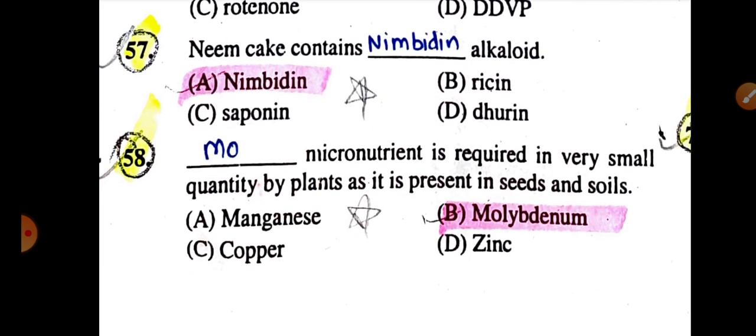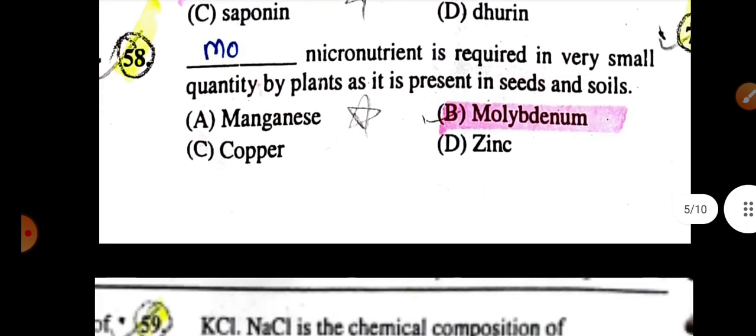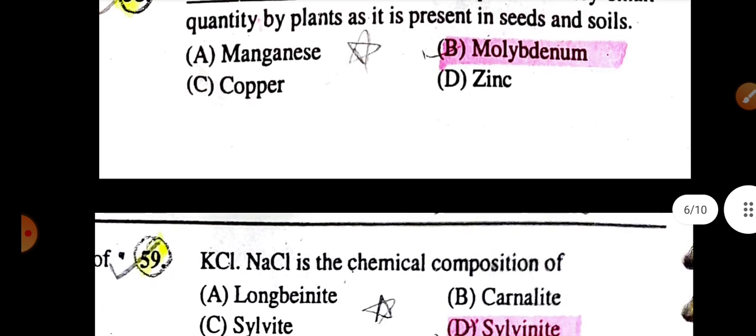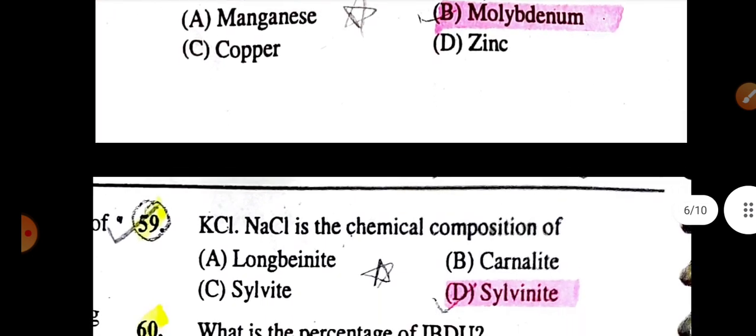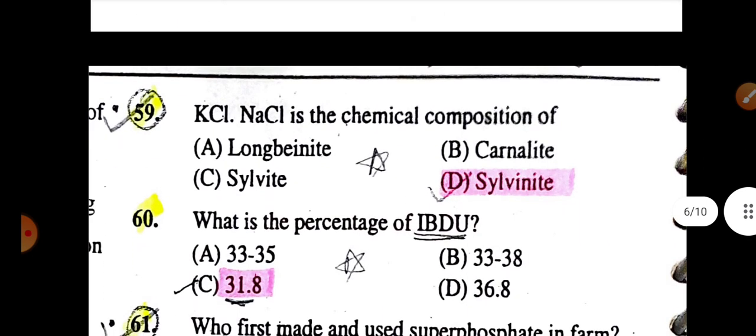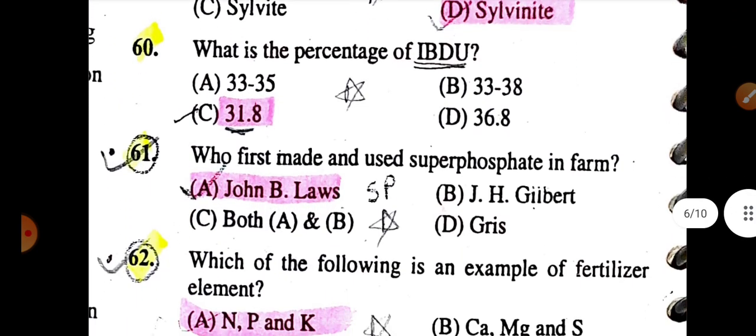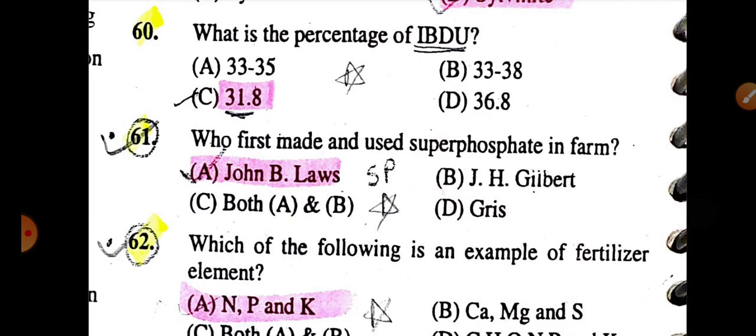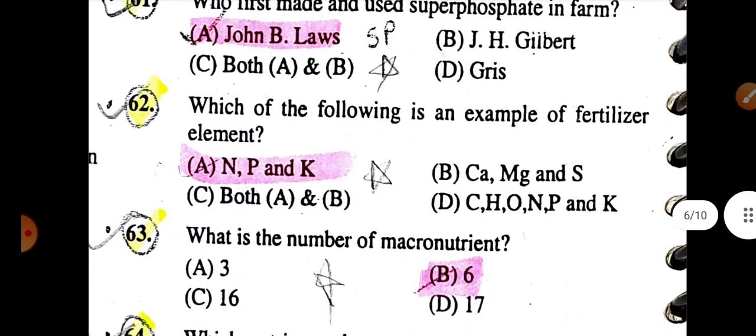The discovery of DDT was awarded the Nobel Prize. Neem cake contains Nimbidin alkaloid. Molybdenum micronutrient is required in very small quantity by plants as it is present in seed and soil. KCl and NaCl is the chemical composition of sylvanite. What is the percentage of nitrogen in IBDU is 31.8%. Who first made and used superphosphate on farm is John B. Lawes.